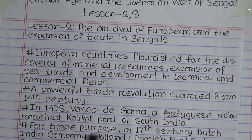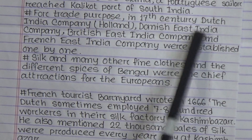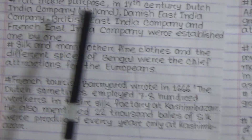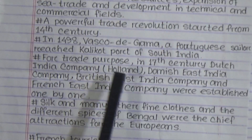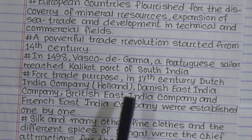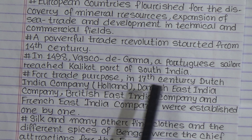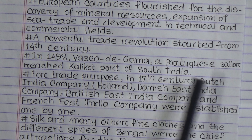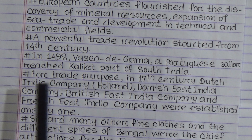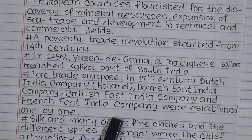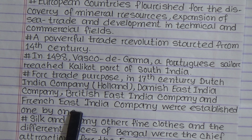In the 17th century, the Dutch East India Company, Danish East India Company, British East India Company, and French East India Company were established one by one. As trade developed in South India, foreigners from various countries came to India and established their own companies for the purpose of trade and business.